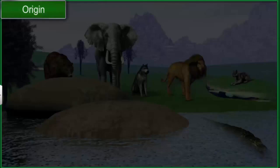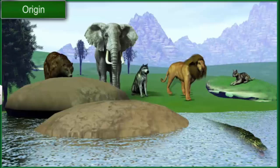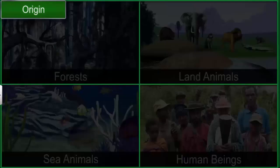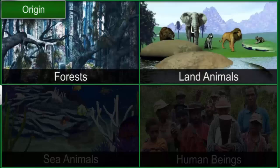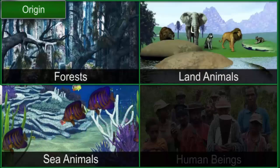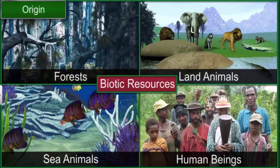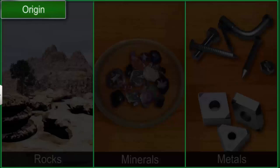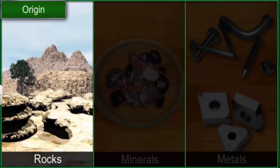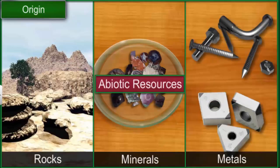Resources can be living or non-living. All resources that come from living things like forests, land and sea animals, insects, and human beings are called biotic resources. Resources in the form of non-living things like rocks, minerals, and metals are called abiotic resources.